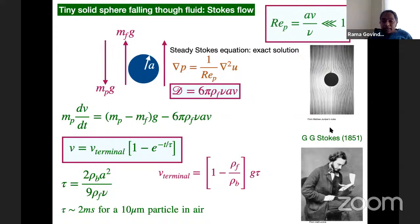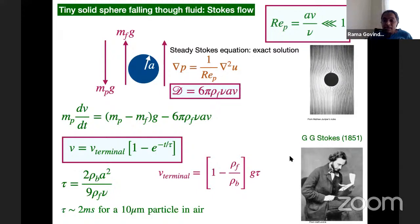In 1851, G.G. Stokes — who looked more like this photo of a younger man than the old white-bearded photo you might see elsewhere — gave this equation.